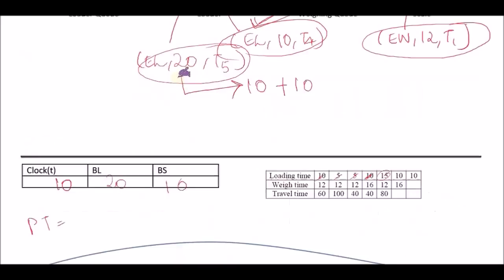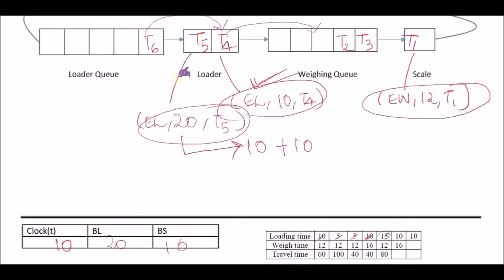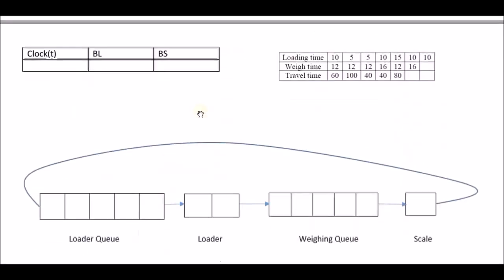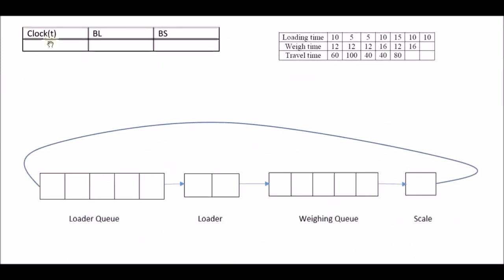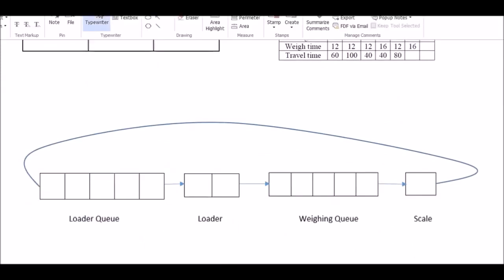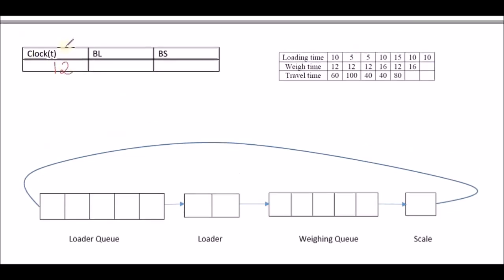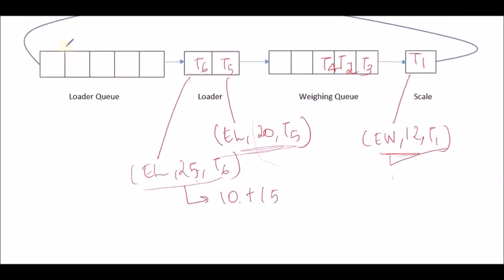Now let's calculate BS and BL. Since this is a simultaneous event — both at time 10 — the past time is zero. So BL and BS remain the same as the previous step: BL=20 and BS=10. Among the future event list of 25, 20, and 12, the imminent event is 12. So we're going to consider 12 in our next clock cycle.